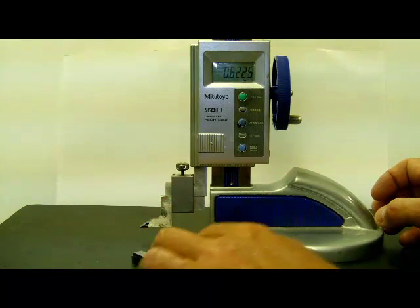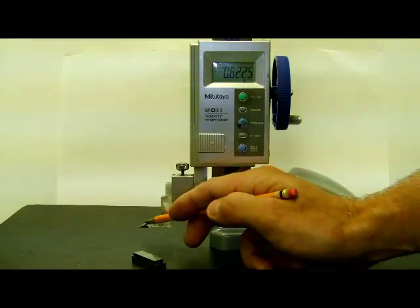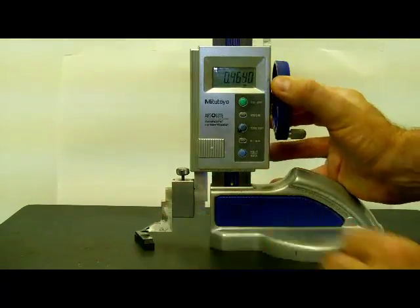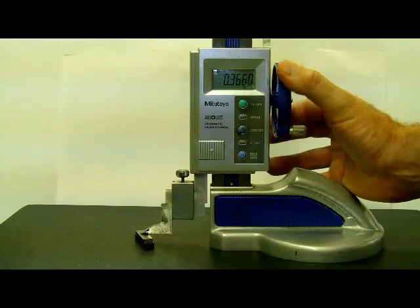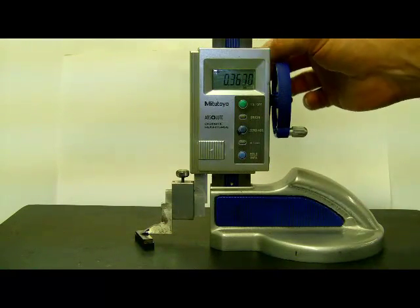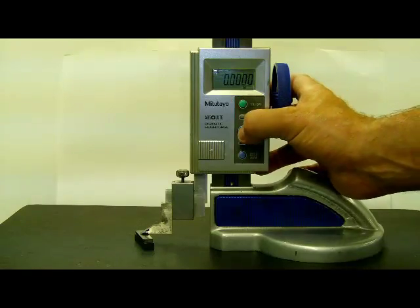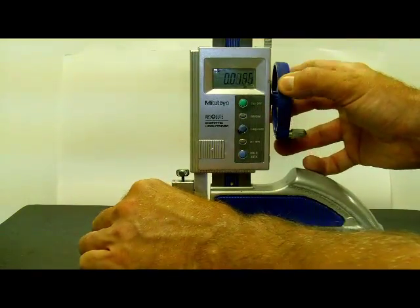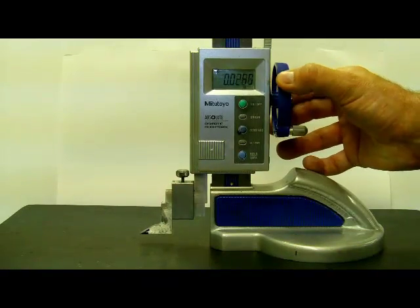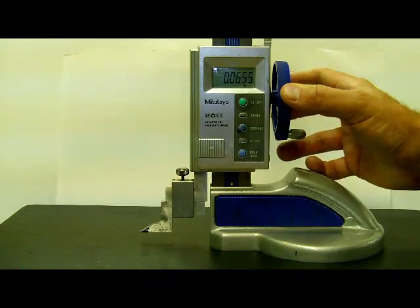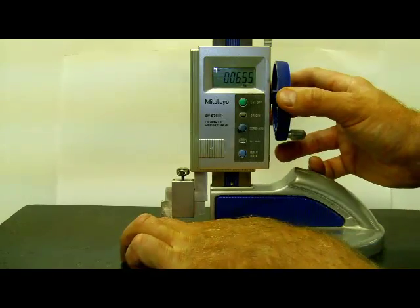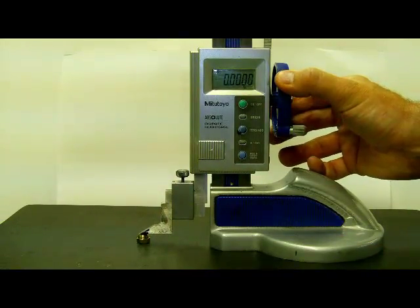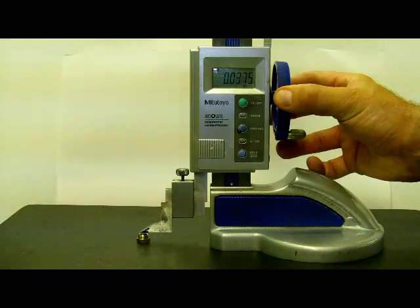If I wanted to use it for comparison type measurement, it's set up for layout but we could still do comparison type measurement with this. I can bring it down and touch a standard, lock it, and I can set zero. Unlock it now. Anything above the standard is plus, anything below the standard is minus, and we can put our part underneath again, bring it down and touch it and I can check the plus or minus on it as compared to the standard.